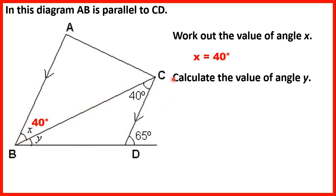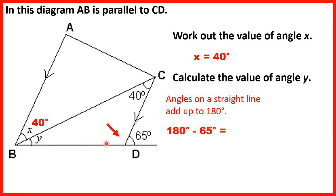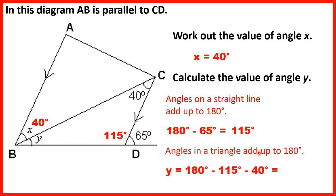Now we need to calculate angle Y. Angles on a straight line add up to 180 degrees, so subtracting 65 from 180 gives us 115 degrees for the adjacent angle. Now we have two angles in a triangle: 115 and 40, which total 155. Subtracting from 180 gives us 25 degrees for angle Y, because 115 plus 40 plus 25 equals 180.